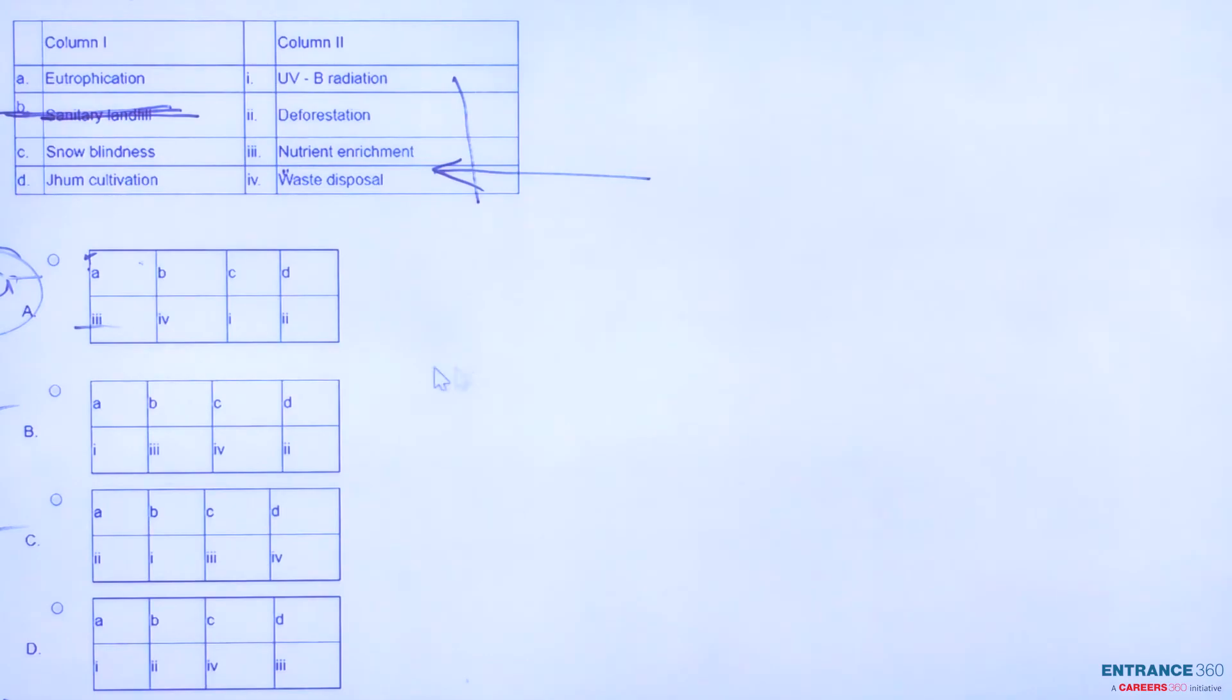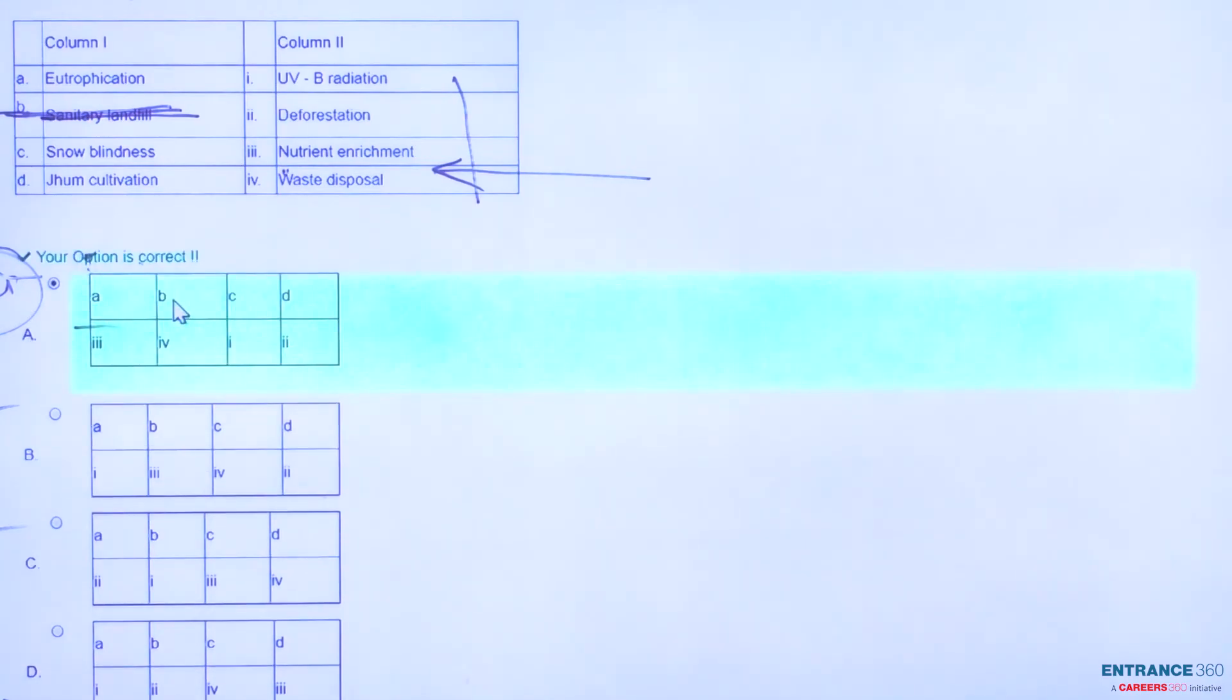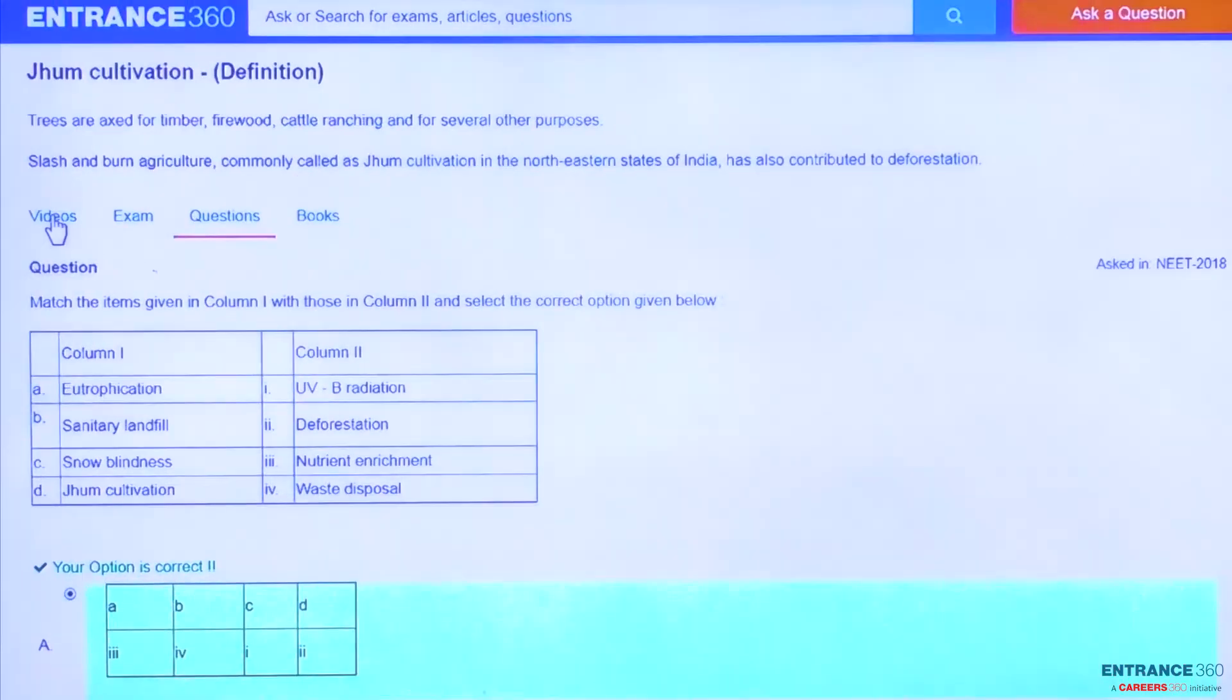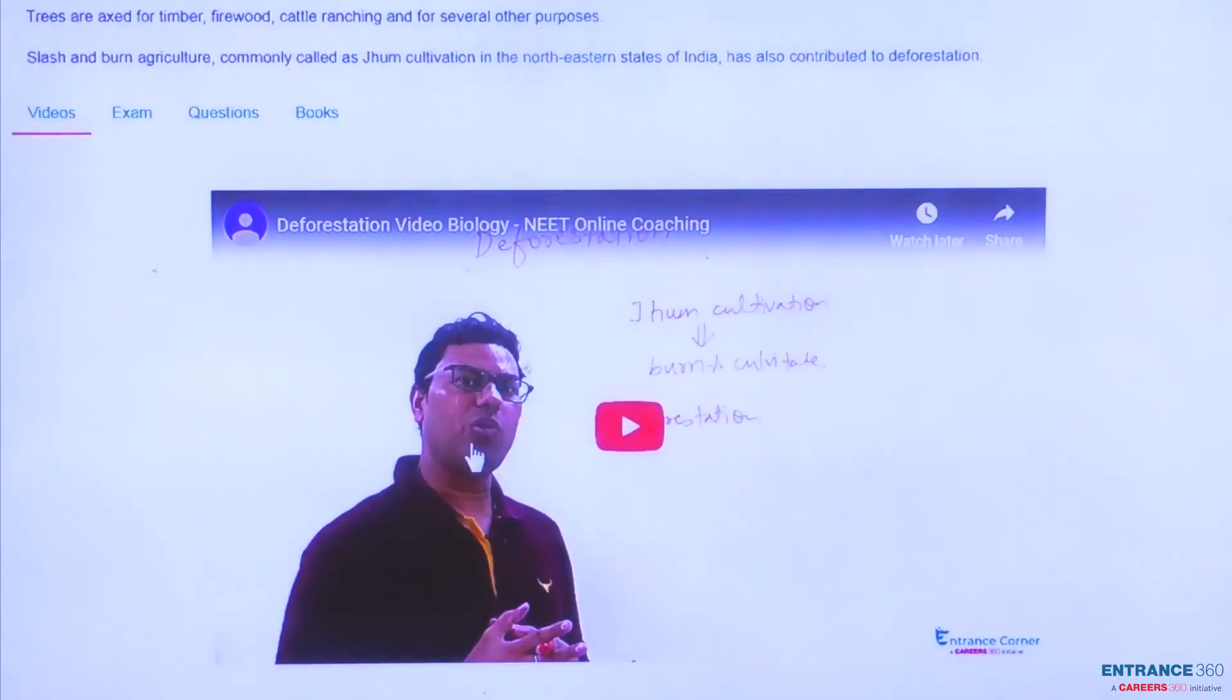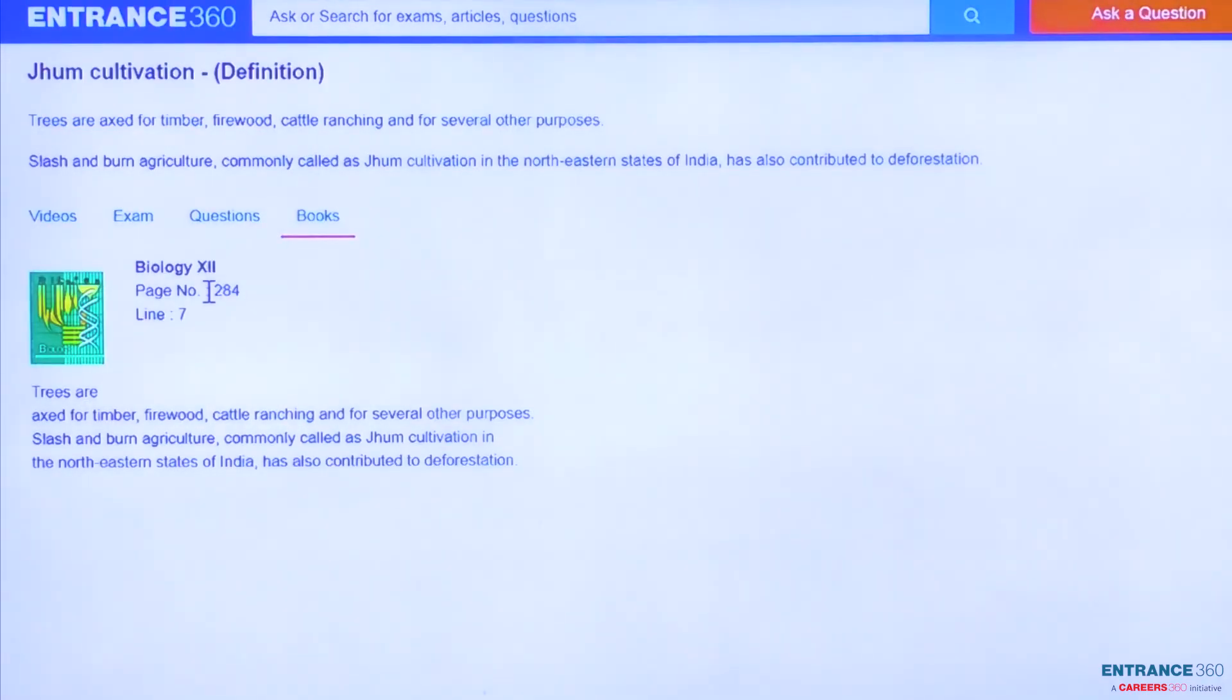Have a look on this, that this is the correct option or not? Yes, it's a correct option. So to know these concepts in deep way, have a look on this video. You will get deep knowledge of this concept. Have a look on this book. It's an NCERT book of biology. Directly go to the page number 284, line number 7. You will get this topic over there.